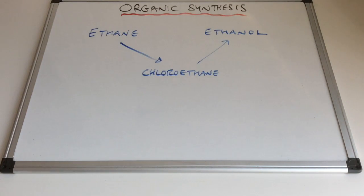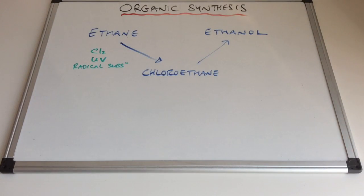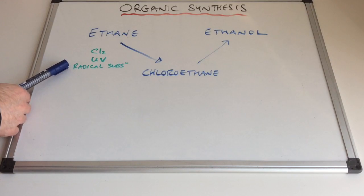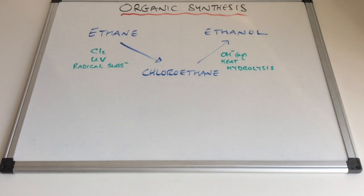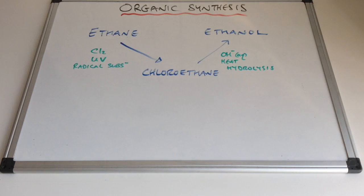For step one, we react ethane with chlorine in the presence of UV radiation — this is an example of radical substitution. For step two, we perform a hydrolysis reaction on the chloroethane by reacting it with aqueous hydroxide ions, such as aqueous sodium hydroxide, and this also needs heat.